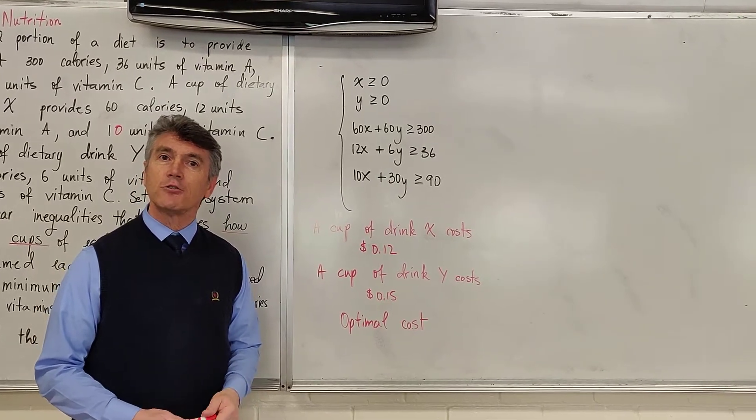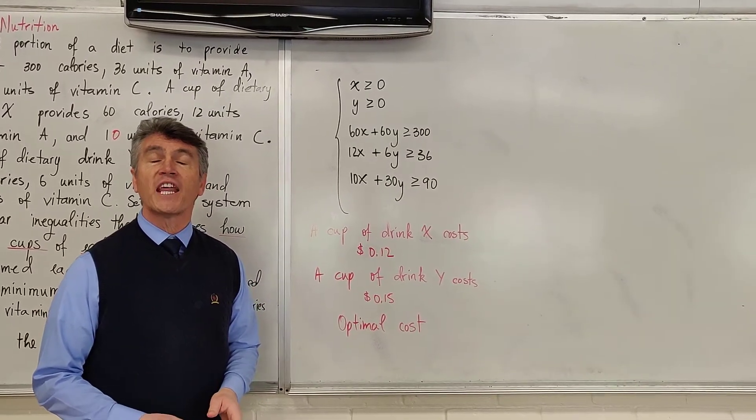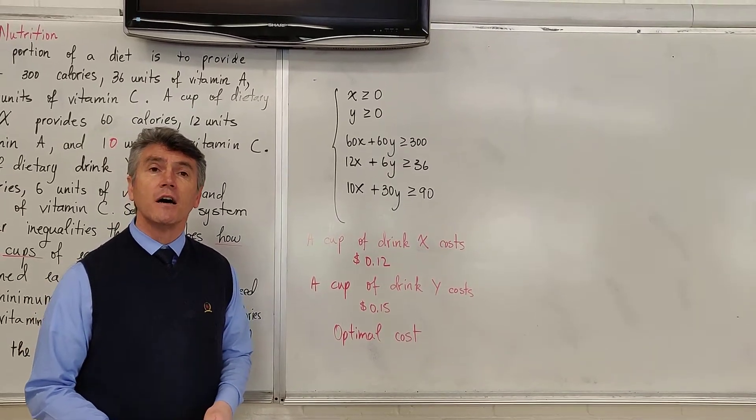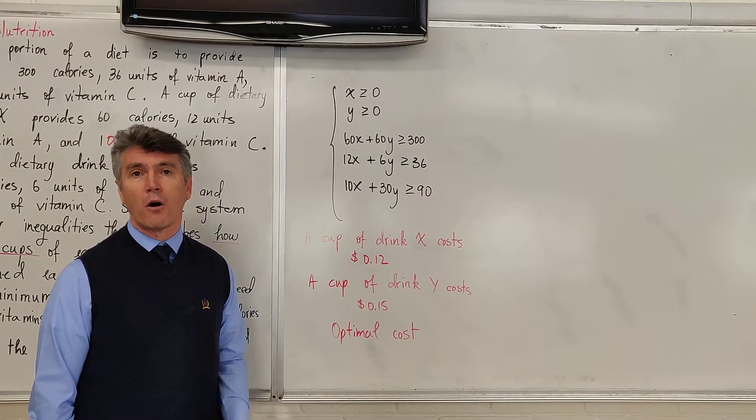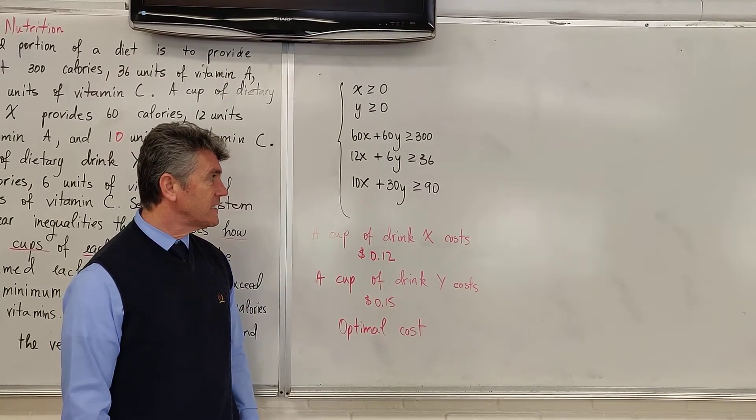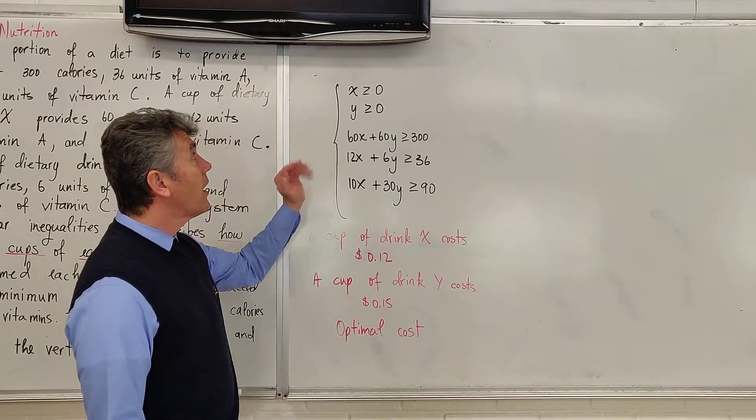And we want to find the optimal cost. What does that mean? It means that you want to meet all the dietary requirements, and you want to do that at the least possible cost. But we won't have to worry about it until lesson 7.6. Let's see how we graph this.